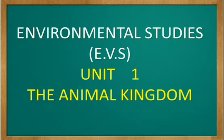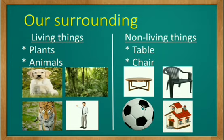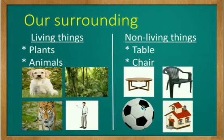The first unit is the animal kingdom. In our surroundings we have two things: living things and non-living things. Under living things we have plants and animals. See the pictures in the first column — there is a dog, plants and trees, tiger and a human being. In the second column you have non-living things: a table, chair, ball and a house. These are a few examples of living and non-living things.